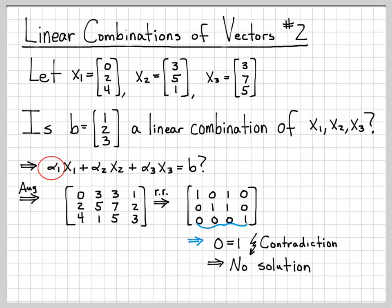There are no values of alpha 1, alpha 2, and alpha 3 that make this equation true. So since there is no solution, that means that b is not a linear combination of x1, x2, and x3. I cannot write b as a linear combination of these three vectors because I can't find alpha 1, alpha 2, and alpha 3.